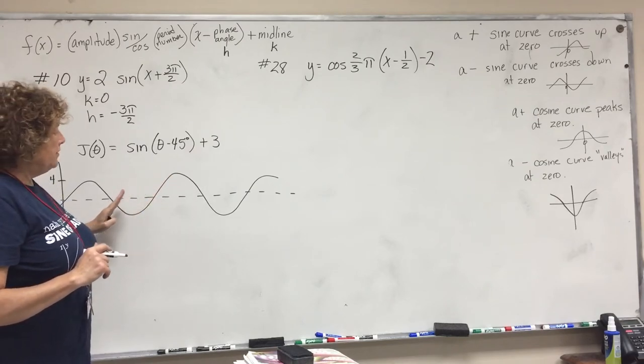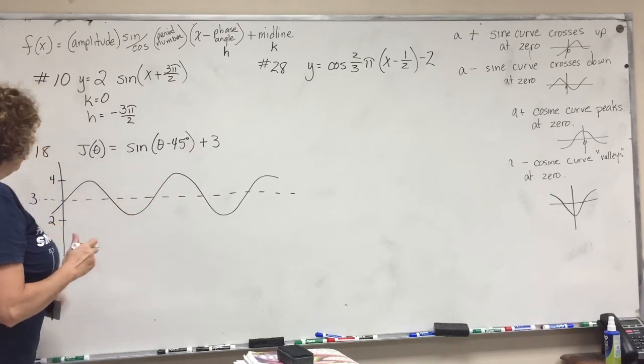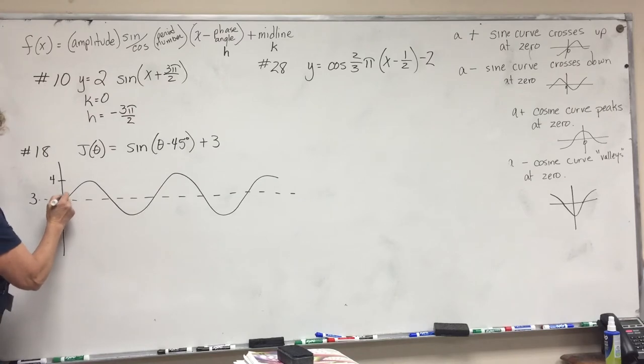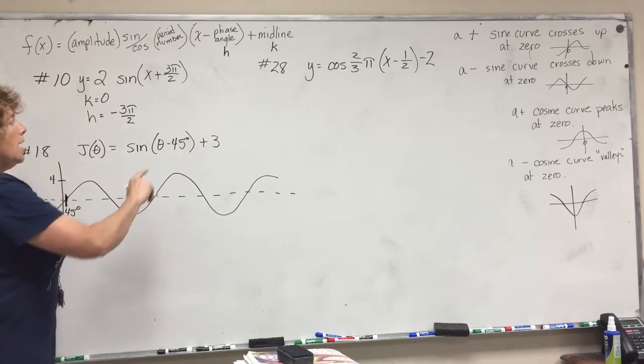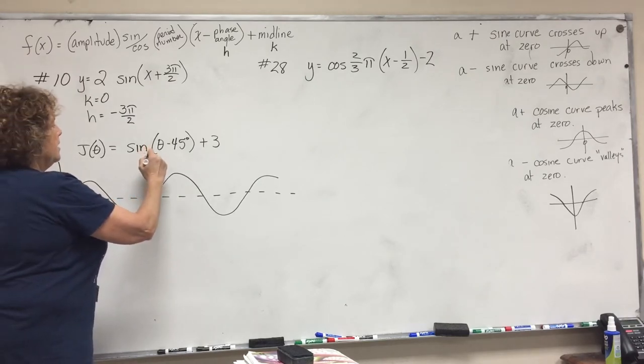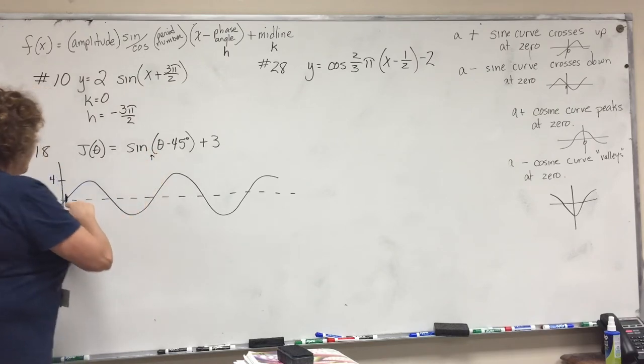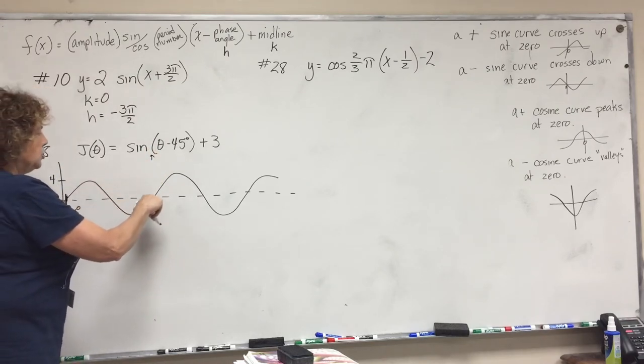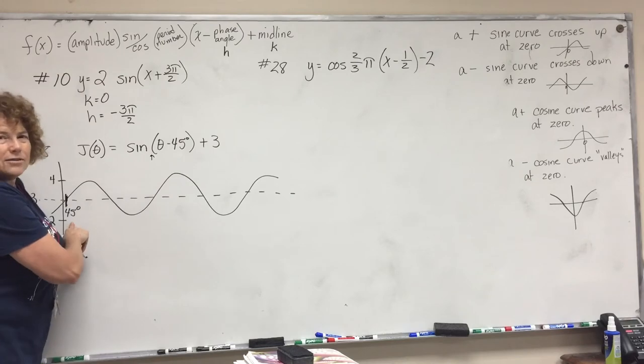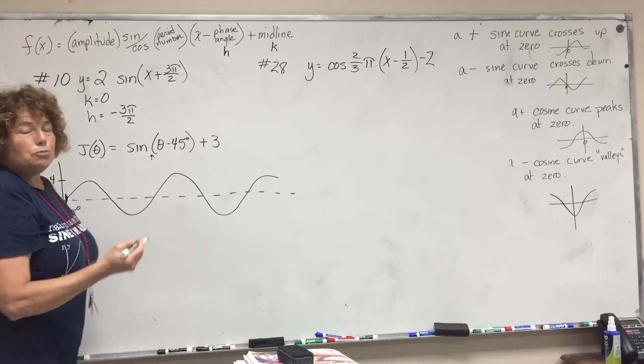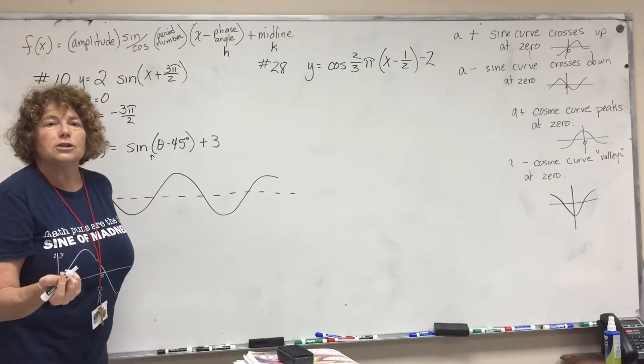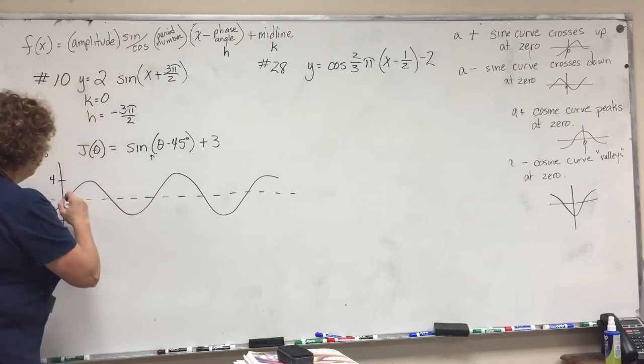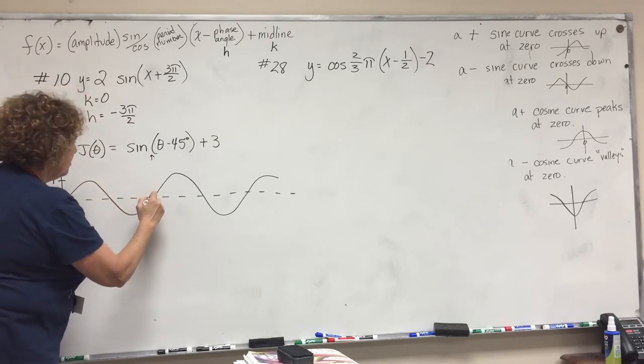Next, our phase angle—it's been shifted to the right 45 degrees. Now we know that a sine curve crosses up at zero, but if it's shifted to the right it's now going to cross up—label this 45 degrees. So if you look, the period number is 1, so that means this is 2π. Well you notice they give it to us in degrees and 2π is equal to 360 degrees, so that means from here to here is 360 degrees.